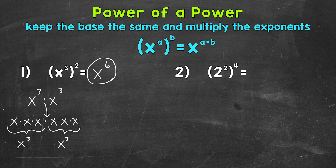Let's move on to number 2, where we have 2 squared to the power of 4. Keep the base of 2 the same, and then multiply the exponents: 2 times 4 equals 8. So we get 2 to the power of 8 for our solution. Now that equals 256.